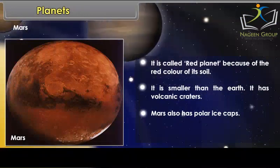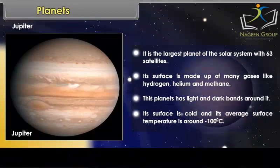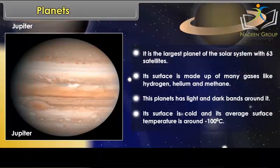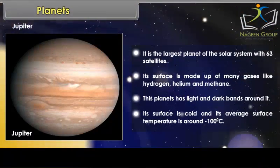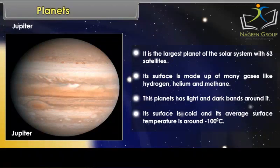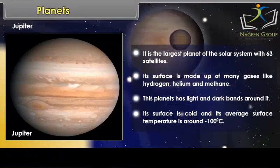Jupiter's surface is made up of many gases like hydrogen, helium and methane. This planet has light and dark bands around it. Its surface is cold and its average surface temperature is around minus 100 degrees Celsius.